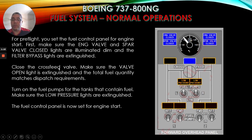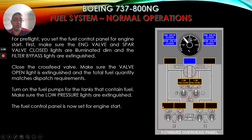Close the cross-feed valve. Make sure the valve open light is extinguished - it is extinguished - and the total fuel quantity matches dispatch requirements. Turn on the fuel pumps for the tanks that contain fuel; in this case we have the main fuel tank pumps on. Make sure the low pressure lights are extinguished - you can see them extinguished here. The fuel control panel is now set for the engine start.